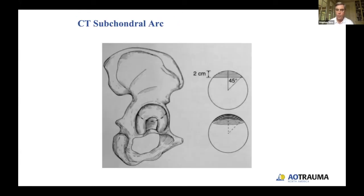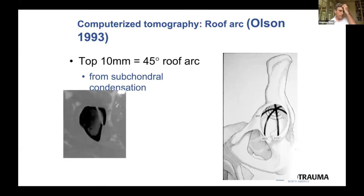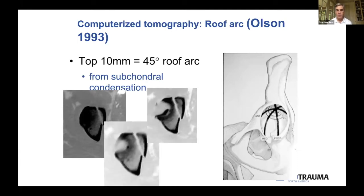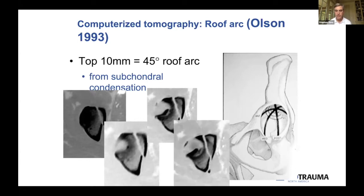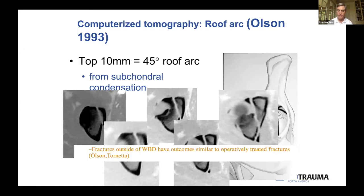CT scans have been used to correlate with these 45-degree arcs. Work from Steve Olson and Joel Matta found that the top 10 millimeters on CT equals approximately a 45-degree roof arc angle. On CT with 2mm cuts, you can see the subchondral condensation at the superior acetabulum. Counting down: at 2mm, 4mm, 6mm — still not into the joint; at 8mm we're into the joint. So this fracture exits into the joint somewhere between 6 and 8 millimeters, involving the weight-bearing dome (upper 10mm of the acetabulum), meaning this patient would probably meet criteria to be operated on.